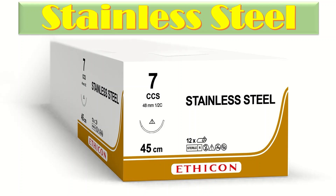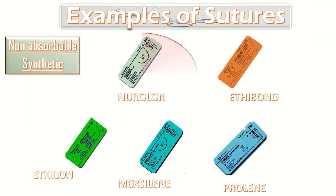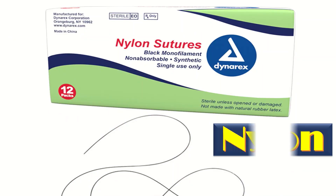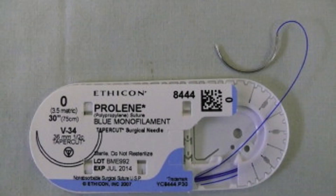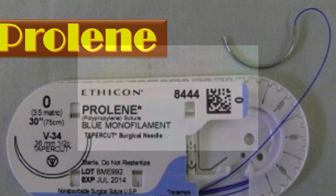Non-absorbable synthetic sutures include Nurolon, Ethilon, Ethilone, Mersilene, and Prolene. Nylon absorbs water and degrades in vivo at approximately 15 to 20 percent per year. Prolene is a synthetic non-absorbable monofilament used not only in vascular surgery but also to stitch the skin and subcuticular layers. That covers the different types of sutures, their classifications, types, and uses.